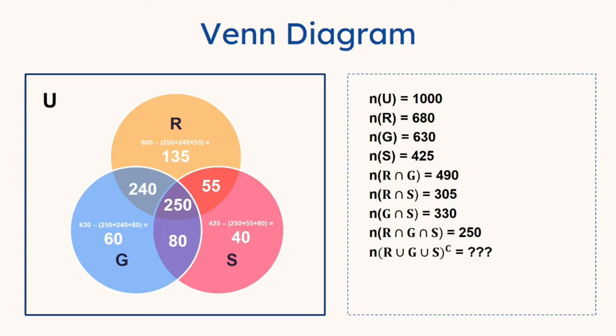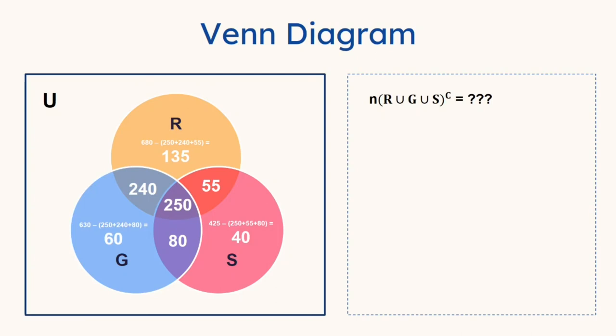As we are going to answer what's N of R union G union S complement. So this is determined by 1000 minus all of the numbers that's inside the Venn diagram combined. 1000 minus 135 plus 40 plus 60 plus 240 plus 55 plus 80 plus 250. The order of what's inside the parentheses doesn't really matter because you're going to get the same results anyway, which is 1000 minus 860 after you add everything together. And the answer is then 140.